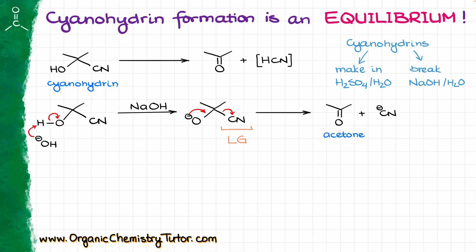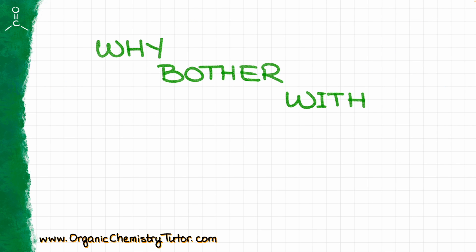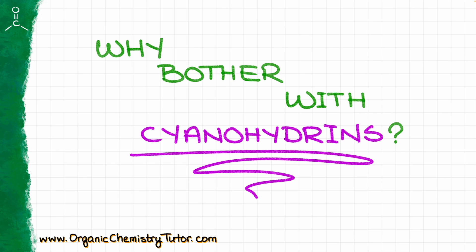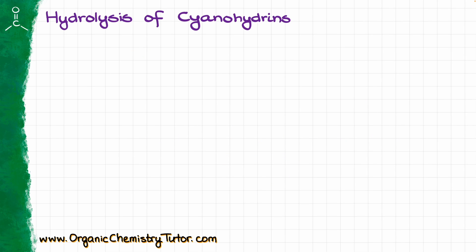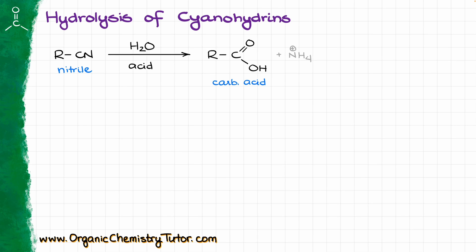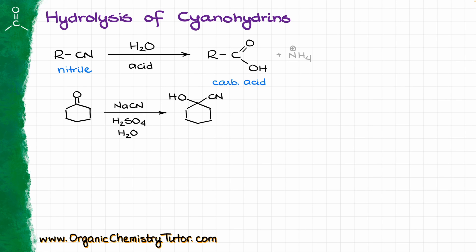Now, why bother with cyanohydrins? Cyanohydrins actually have a couple of very neat uses. First, we can hydrolyze the cyanohydrin to a corresponding carboxylic acid. The nitrile functional group can relatively easily hydrolyze in acidic conditions to the corresponding carboxylic acid. For instance, if I took cyclohexanone and converted it into the corresponding cyanohydrin, I can hydrolyze it into 1-hydroxycyclohexane carboxylic acid, which would be significantly more challenging to make using other synthetic procedures. Whenever we need a carboxylic acid with a functional group in the alpha position, cyanohydrins might be a very good synthetic intermediate.